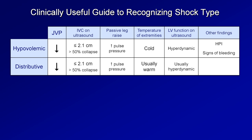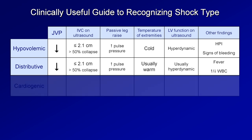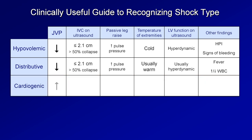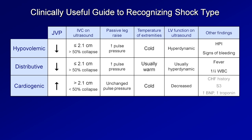Other findings in distributive shock — specifically the septic shock subtype — include fever and alterations of the white blood cell count. In cardiogenic shock: JVP is elevated, IVC is typically dilated and non-collapsible, pulse pressure does not significantly change with leg raise, the extremities are cold, and LV function is low on ultrasound. Other notable findings may include a history of CHF, presence of an S3, or elevations of B-type natriuretic peptide and troponin.